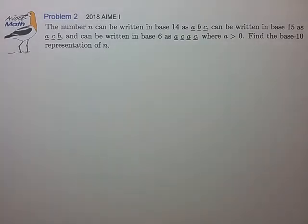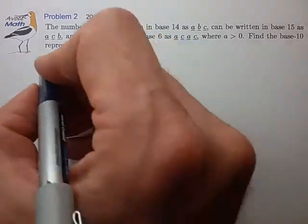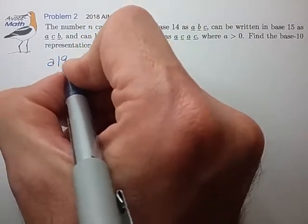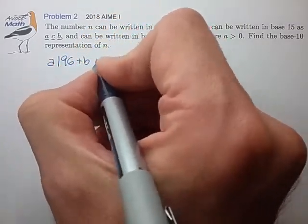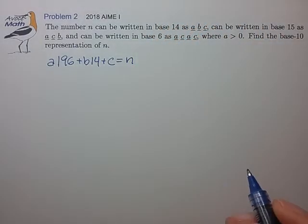This is a number base problem where we want to express all numbers in terms of powers of the base. For base 14, we write that as a times 14 squared plus b times 14 plus c. That's one way to express n.